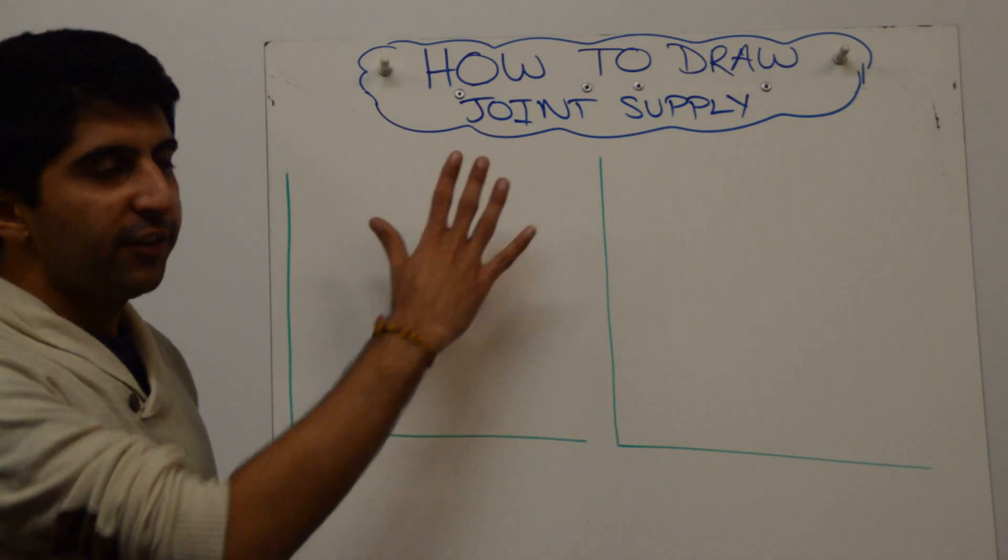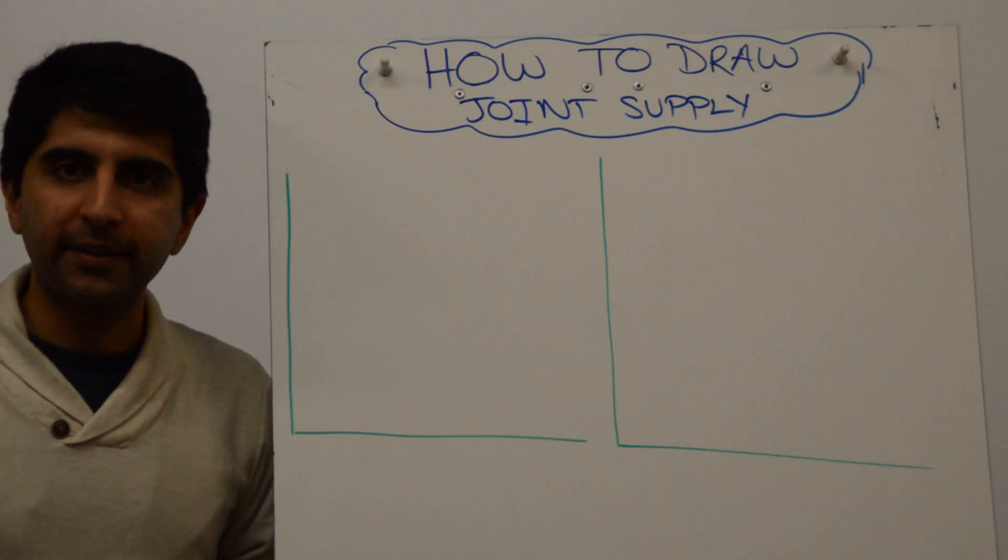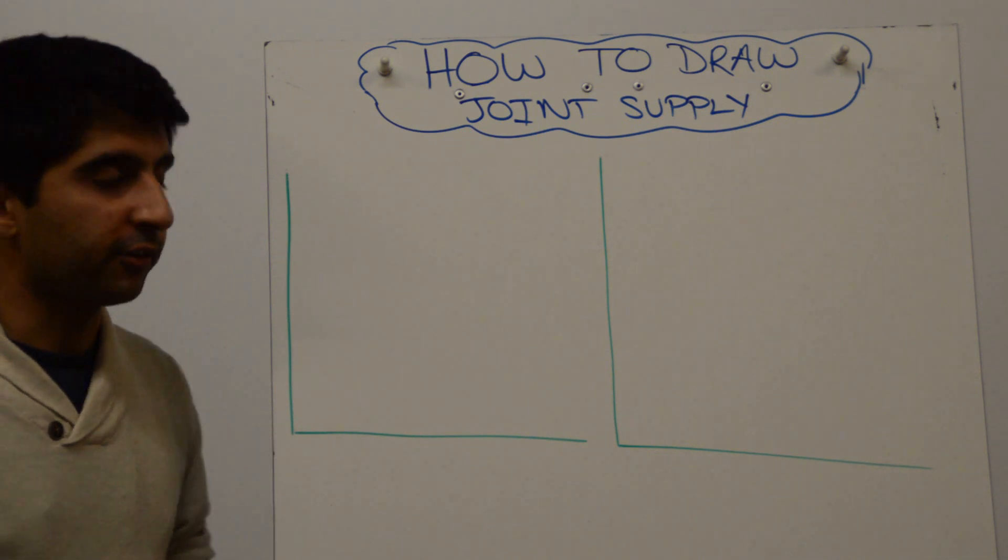Hi everybody! You need to show joint supply diagrammatically. How do you construct these diagrams?